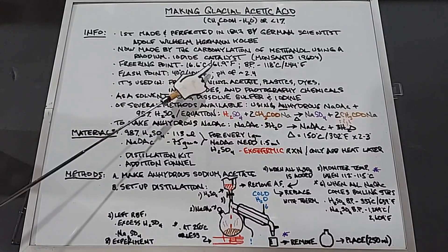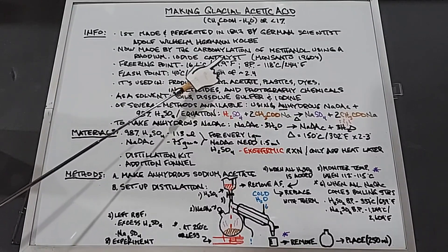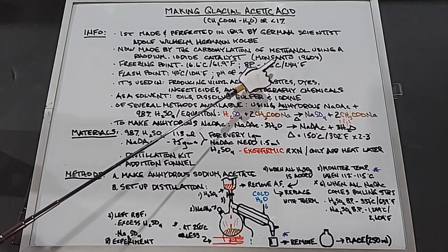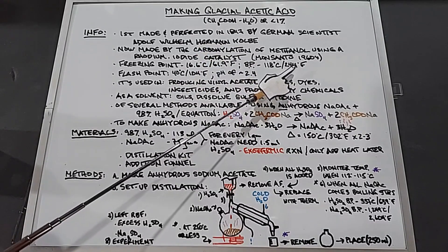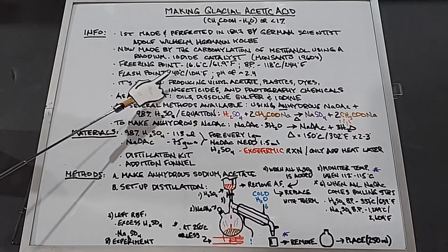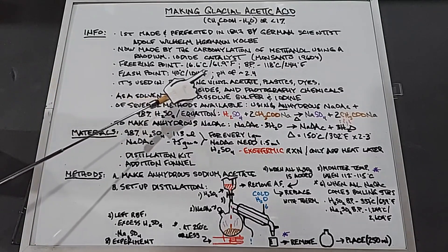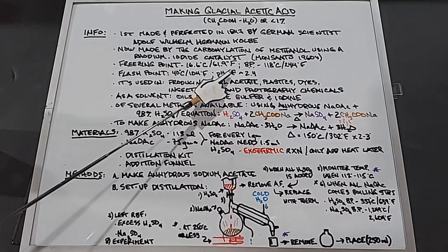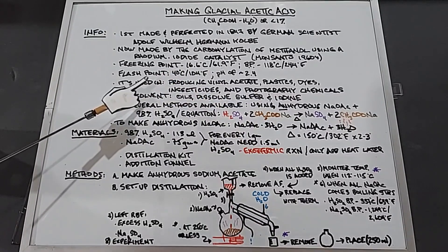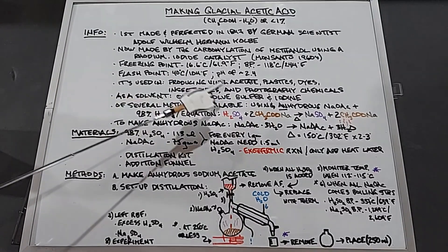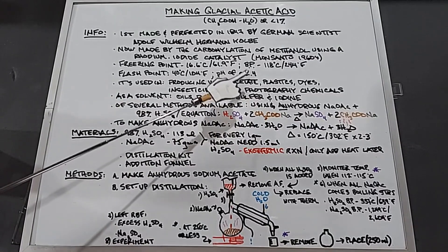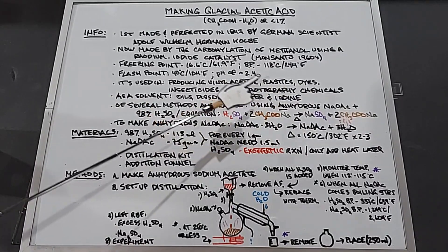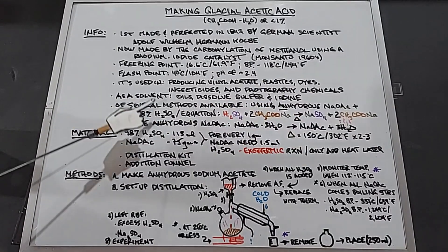It's now made by the carbonylation of methanol using a rhodium iodide catalyst, discovered by Monsanto in the 1960s. Glacial acetic acid has a pretty low freezing point at 16.6°C (61.9°F), a boiling point of 118°C (244°F), and a flash point of 40°C (104°F), which is relatively low. It has a pH of 2.4.